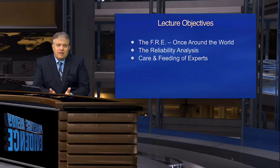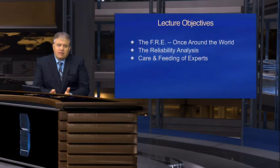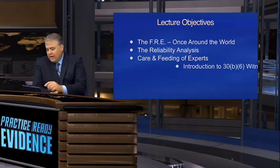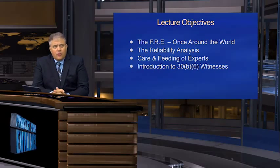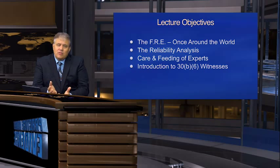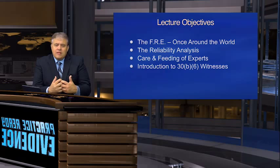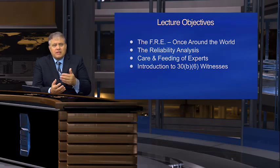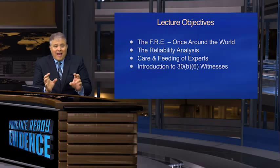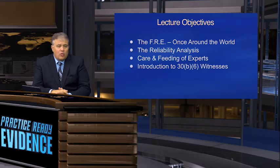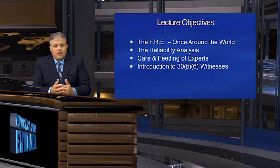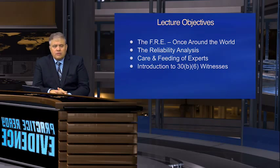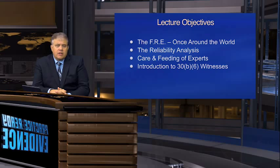I want to talk about the care and feeding of expert witnesses — they're just a little different, and you have to be careful in both your interaction with them and your presentation of them. Then I want to talk about 30(b)(6) witnesses and how they work. A 30(b)(6) witness is empowered under the federal rules of civil procedure to speak on behalf of an entire corporation or entity and to bind the entity for purposes of that litigation through their testimony. Everyone involved in complex litigation needs to be aware of this.